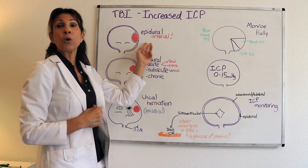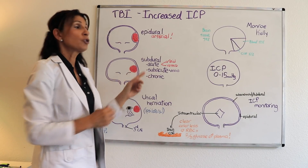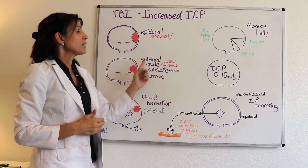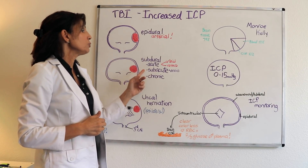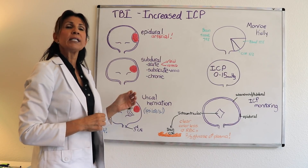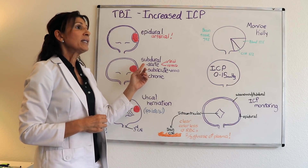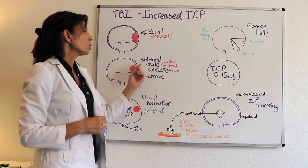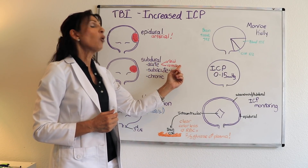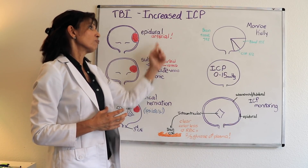An epidural hematoma is associated with rapid accumulation, requires surgical evacuation, and is arterial in origin. The next type is a subdural hematoma — below the dura. Subdural hematomas have three categories: acute, subacute, and chronic. The acute subdural is similar to the epidural in that it needs to be evacuated. It accumulates a little more slowly because it is below the dura, and can be either arterial or venous in origin.